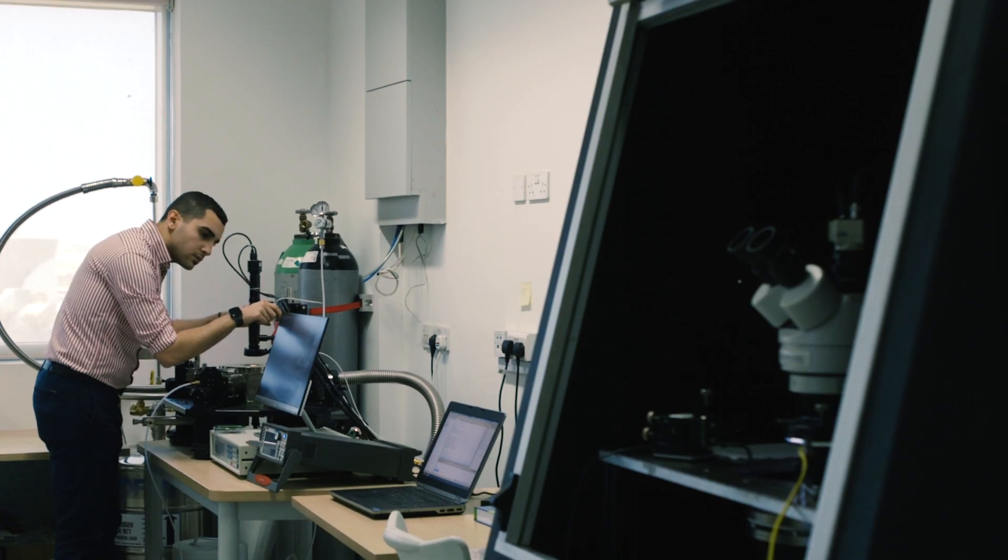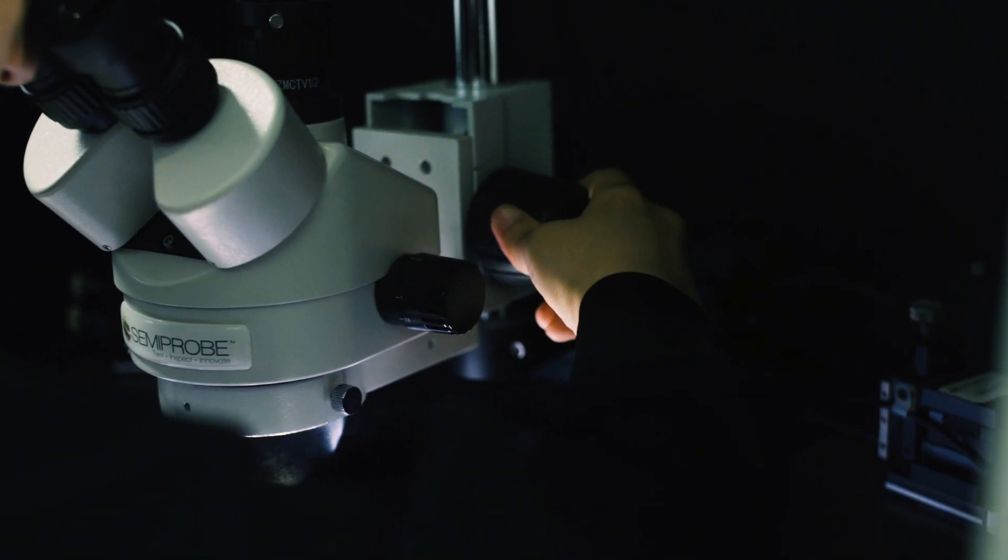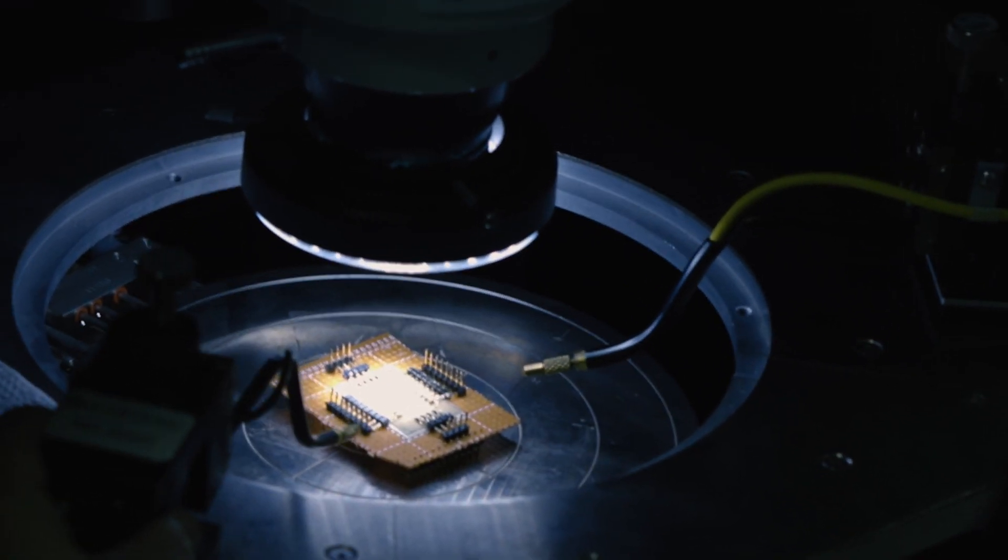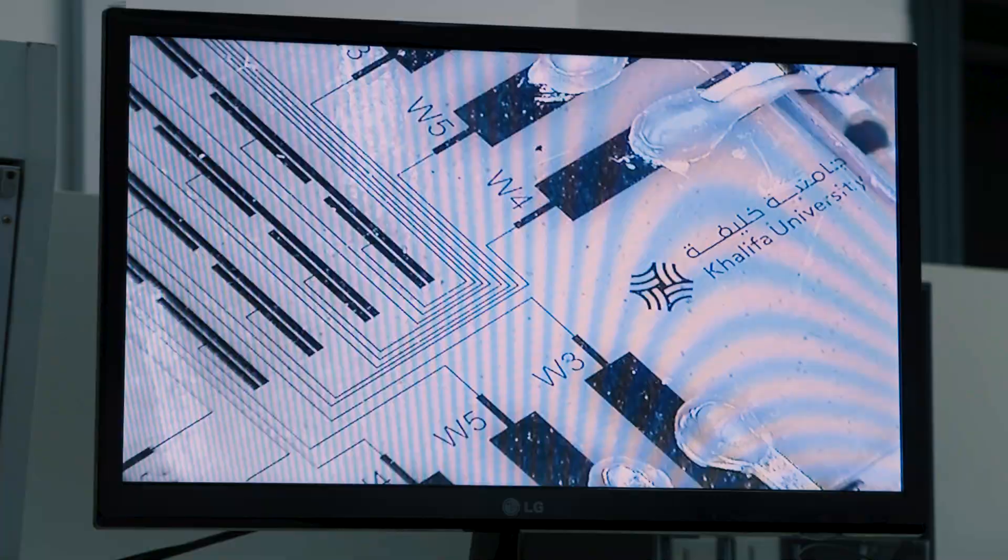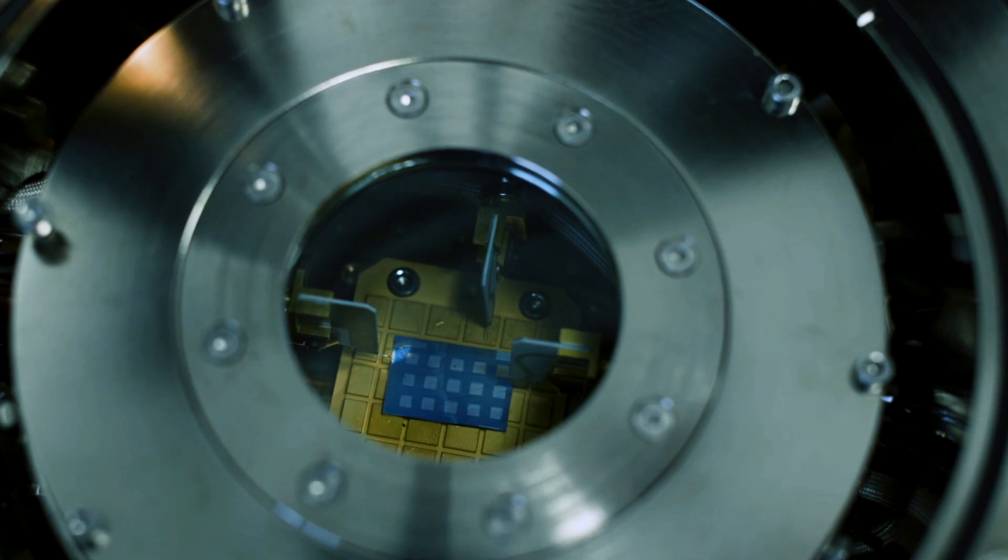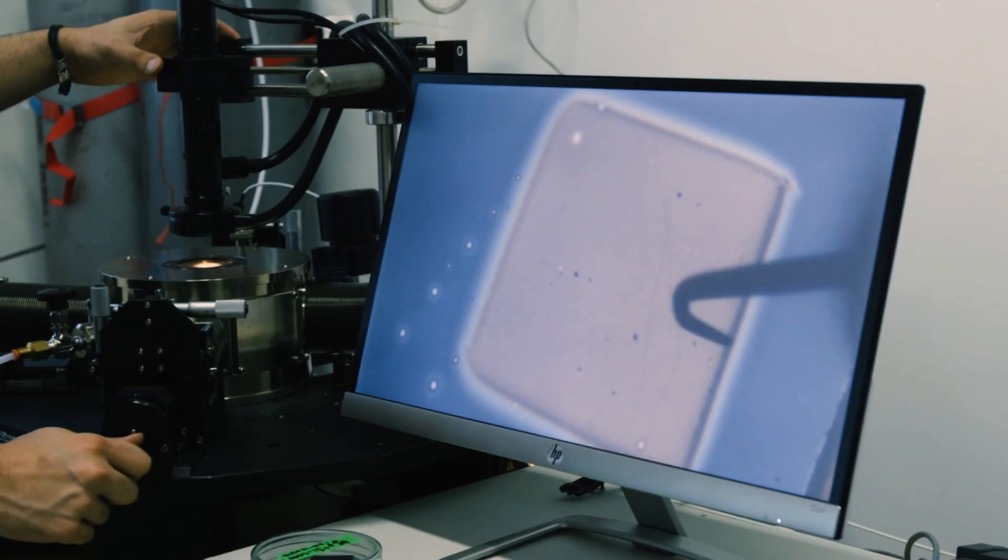Researchers carry out electrical testing of their memristor devices using the centre's two probe stations and Keithley measurement instrument. One station places the device in ambient conditions while the second probe station, called the cryo station, places the device in a vacuum chamber where the device undergoes testing to better understand how it will operate in space.